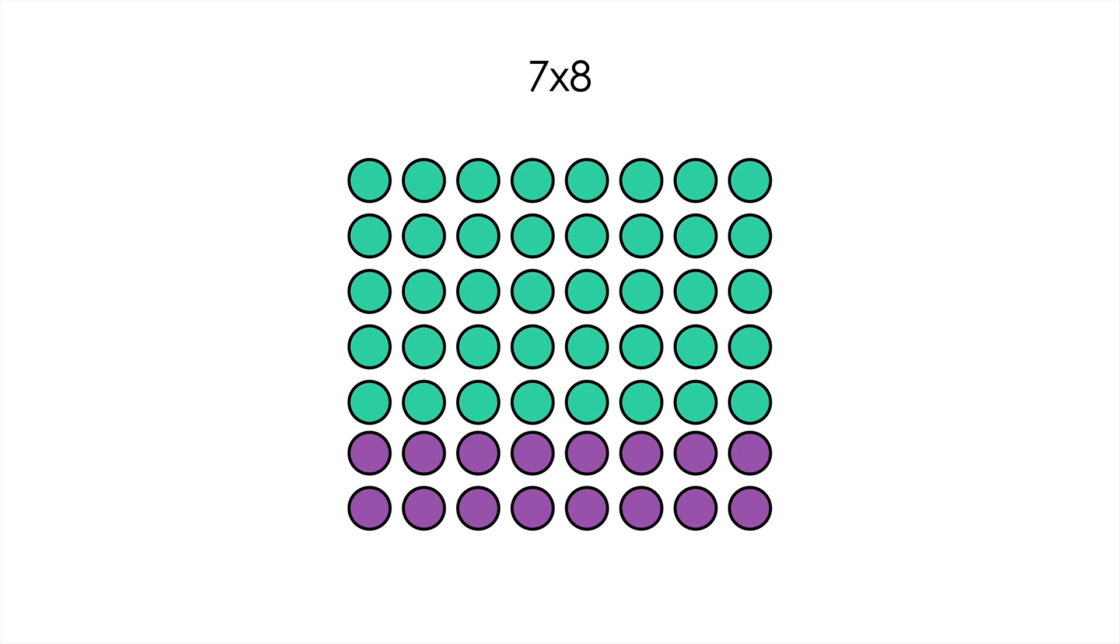Another way that we can use arrays with multiplication is to break up factors into smaller parts. I love this activity. There are a million different ways that we can break up arrays, and this is a great activity to do with your class because there's so much room for different types of thinking. In this example, if you consider the entire array, it represents 7×8. But we can see it's been broken up into two different pieces—a 5×8 piece and a 2×8 piece. We can easily see that if we figure out the total number of dots in each smaller array and then add them up, we would have the number of dots in the total array.